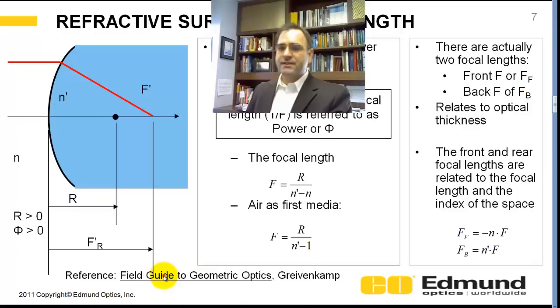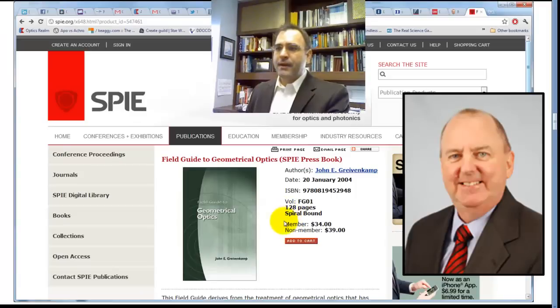The reference here is this field guide to geometric optics by John Grievenkamp. It's a cheap, cool little book. It's 40 bucks for a non-member from SPIE.